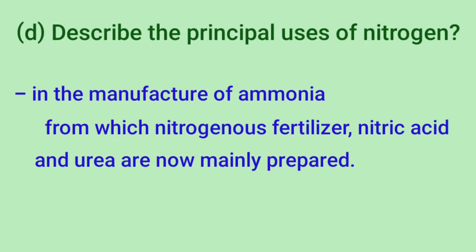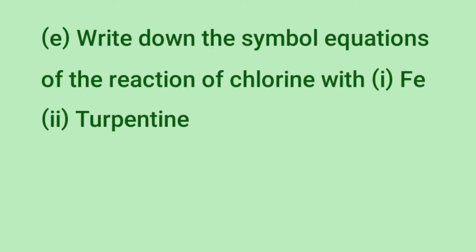Number D: Describe the principal uses of nitrogen. The principal uses of nitrogen are in the manufacture of ammonia, from which nitrogenous fertilizers, nitric acid, and urea are mainly prepared. Ammonia is used to produce fertilizers, for example urea.